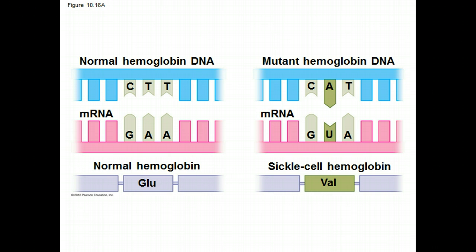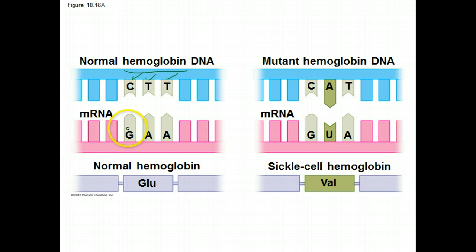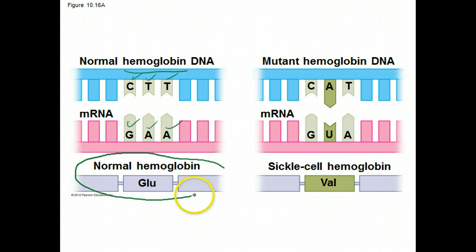One of the things that's really important to understand about gene expression is the significance of a mutation — the impact a mutation to DNA has overall on the function of a protein. Normally, for a gene that encodes hemoglobin, a certain segment of genetic code leads to a certain segment of messenger RNA, which is then translated into a normal sequence of amino acids that makes up hemoglobin.